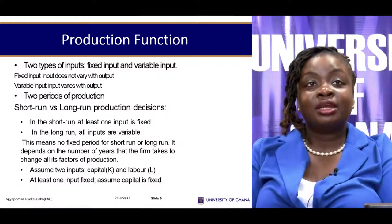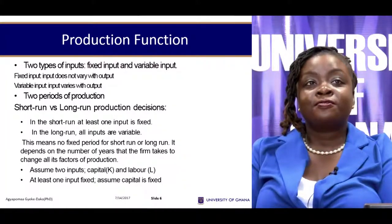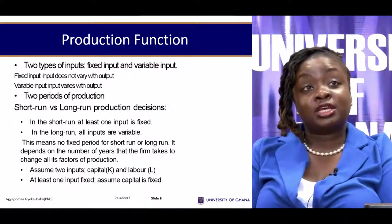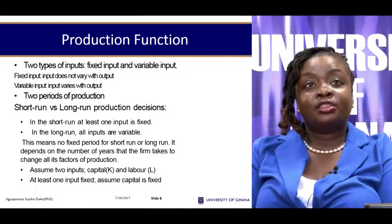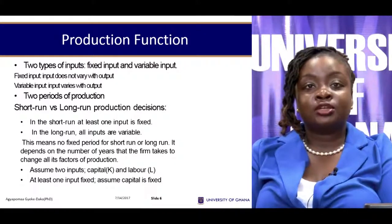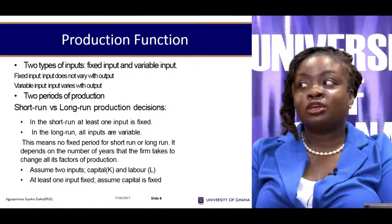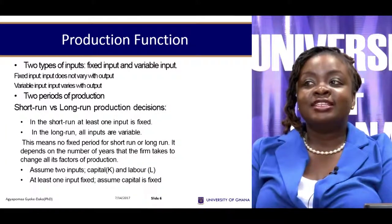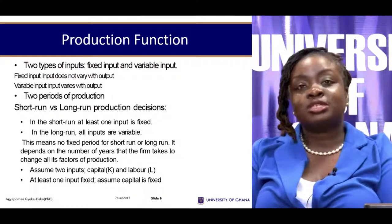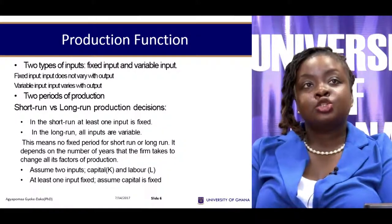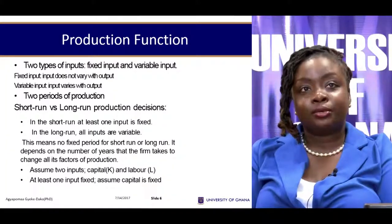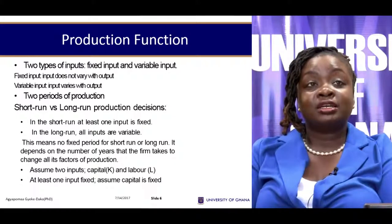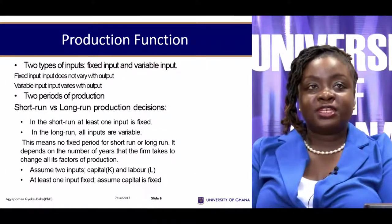Inputs that cannot be changed immediately when you want to change your output are called fixed inputs. For instance, the machinery or building used in production is a fixed input — just because you want to increase output from 100 to 200 doesn't mean you can easily increase the building size. This distinction between fixed and variable inputs is very important.